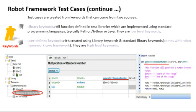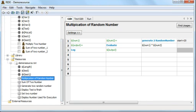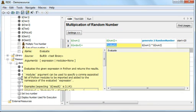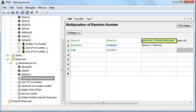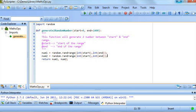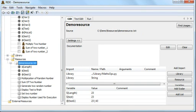User-defined keywords are a combination of library keywords plus standard library keywords. Standard library keywords come with the Robot Framework core installation. For example, a user-defined keyword called 'multiplication of random number' uses the library keyword 'generate two random numbers' from maths_ops.py, and also uses the 'evaluate' function which is an inbuilt built-in keyword. The maths_ops.py is sourced here as part of the library.